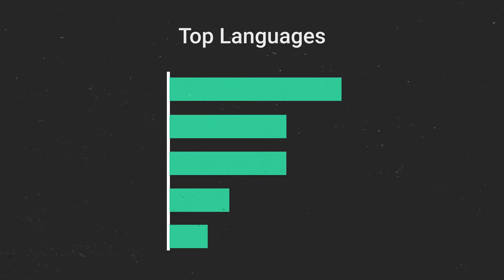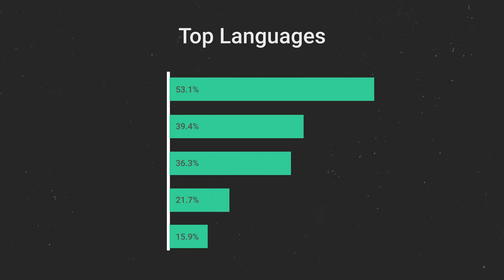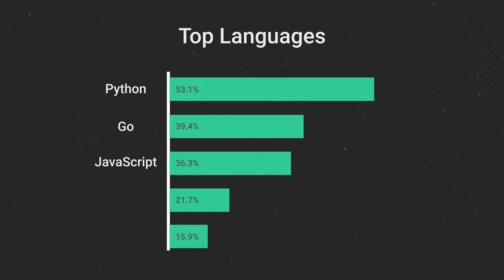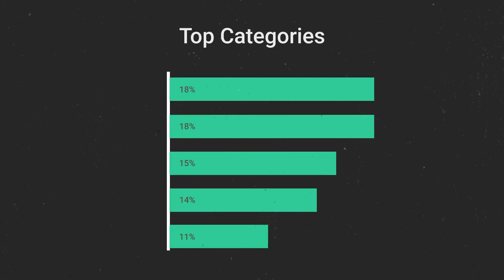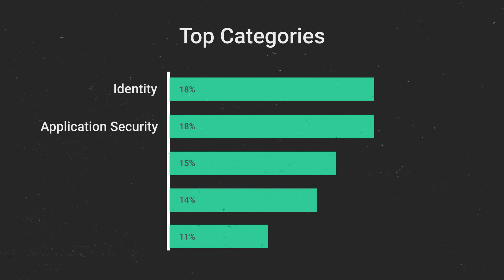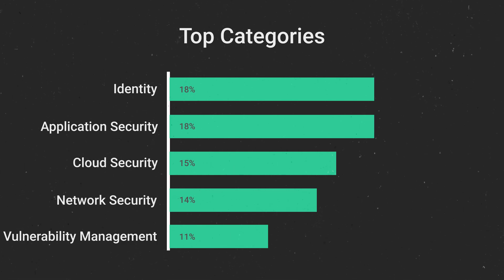Now, before we get started, it's interesting to note that the most commonly used language for these projects by quite a big margin is Python. After that, it's a close race between Go and JavaScript, and finally, C and TypeScript. The projects are even broken down by category, and the top two are identity and application security. After that, we have cloud security, then network security, and finally, vulnerability management.